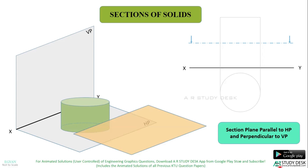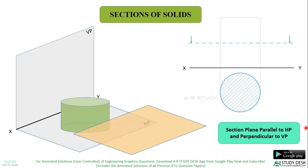Now I will draw two arrows like this. The significance of these two arrows is that if you view in the direction of this arrow, you can see the true shape of this section. So when you view from the top, you can see the true shape. Now you can complete the remaining portion of the cylinder using thick lines. In the top view, the remaining portion will be a circle, and the hatch lines at 45 degrees show that the section plane has passed through that area.